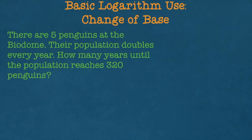By now, you probably are familiar with things that deal with the exponential function and exponential function word problems. I'm going to start off with a word problem that is similar to something that you've already seen before. There are five penguins at the biodome. Their population doubles every year. How many years until the population reaches 320 penguins?